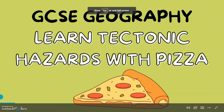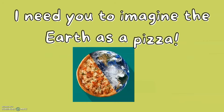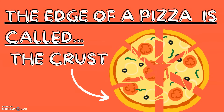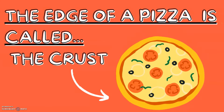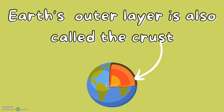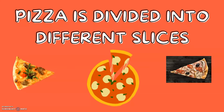GCSE geography: learn tectonic hazards with pizza. Imagine the Earth as a pizza — the edge of a pizza is called the crust, and the outer layer of the Earth is also called the crust.